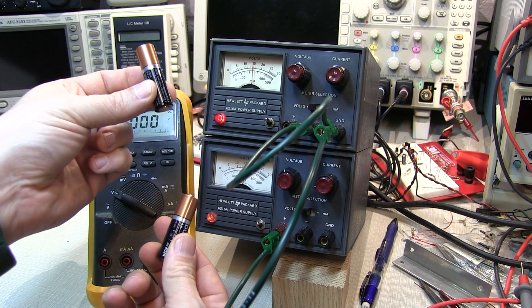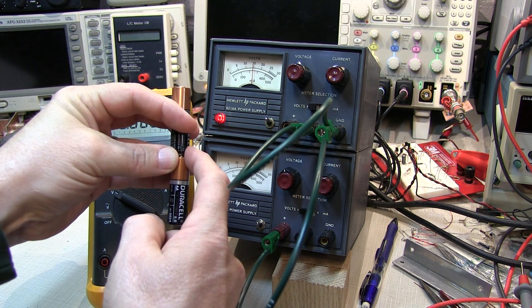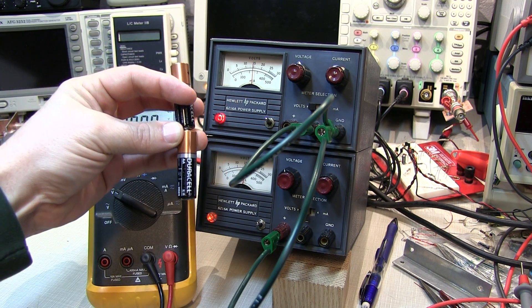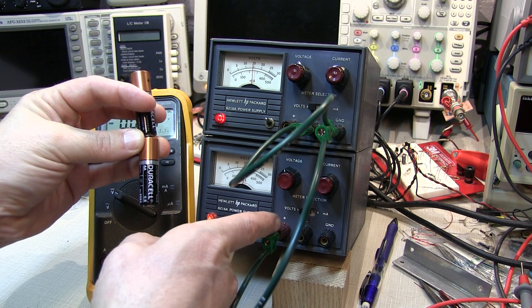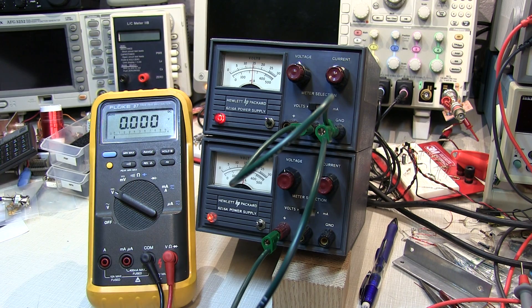This is very much the same as taking two batteries, sticking them in series like that, connecting ground at the middle and having plus 1.5 and minus 1.5 volts on either side of the batteries. Because again, you can consider the positive and negative terminals of a power supply as nothing more than an adjustable battery.